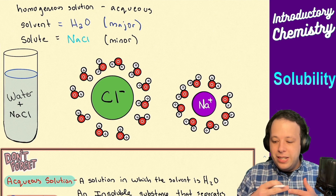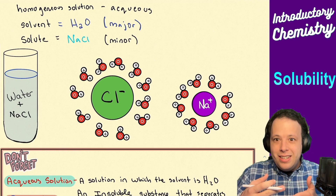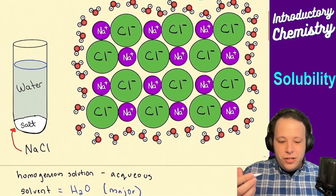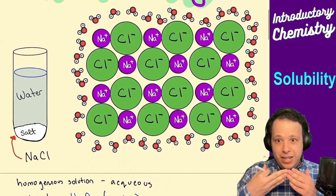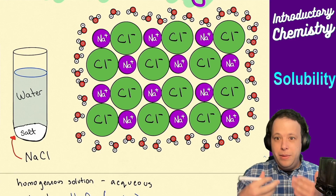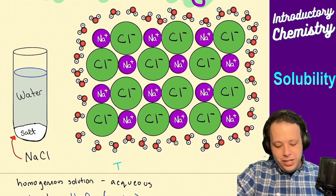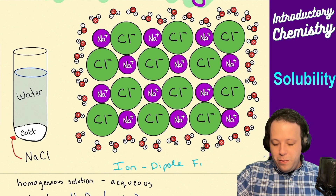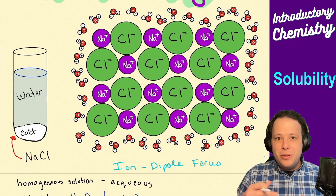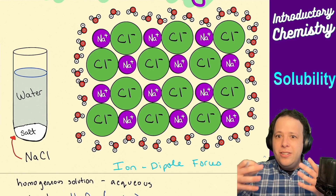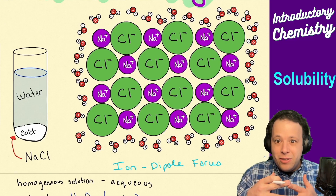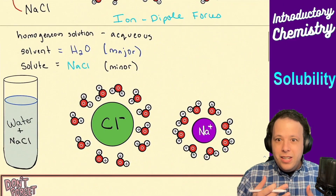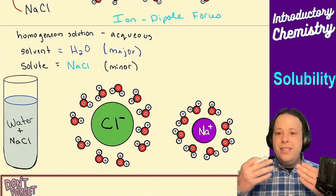When water comes into contact with these particular ions, it starts to surround them, and we're going to create ion-dipole forces forming all around the sodium chloride. When you add hundreds or dozens of water molecules around every single ion, it eventually pulls them apart and causes it to be soluble.